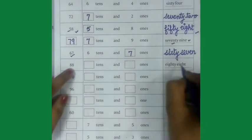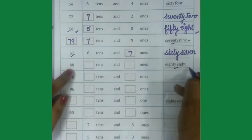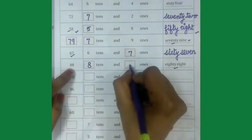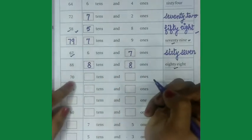Come on next one, 88. 88 is written number name here, so we will write tens and ones, 8 tens and 8 ones.